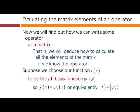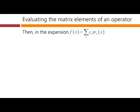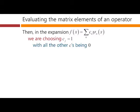So that f of x here is this function ψj of x. Or equivalently, in bra-ket notation, the ket f is the same thing as the ket ψj. Then in this expansion for f of x in terms of the ψn basis set, we're choosing cj, some specific one, equal to one, and all the other c's are going to be zero.